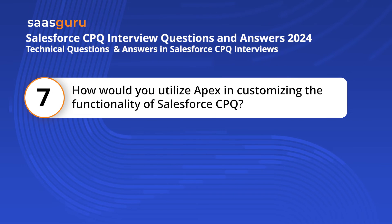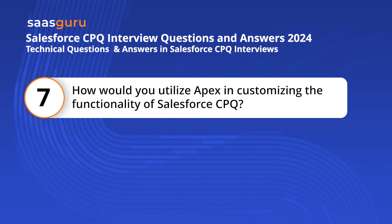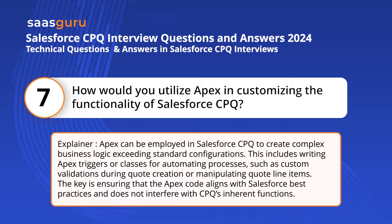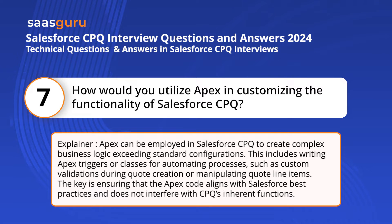Question 7. How would you utilize APEX in customizing the functionality of Salesforce CPQ? APEX can be employed in Salesforce CPQ to create complex business logic exceeding standard configurations. This includes writing APEX triggers or classes for automating processes, such as custom validations during quote creation or manipulating quote line items. The key is ensuring that the APEX code aligns with Salesforce best practices and does not interfere with CPQ's inherent functions.